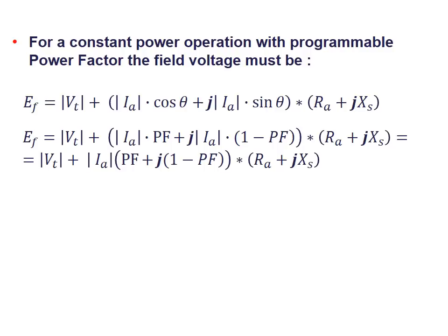In general, for constant power operation with a programmable power factor, take the previous KVL equation. EF equals VT at phase zero, plus the magnitude of IA expanded into real and imaginary parts: IA × (cos θ + j sin θ) multiplied by (RA + jXS). At the last line, substitute cos θ as the power factor and sin θ as the square root of one minus the power factor squared. This gives a general equation for EF.